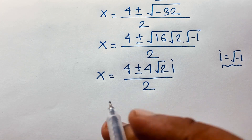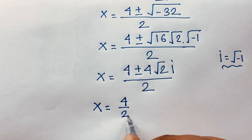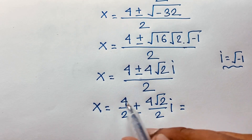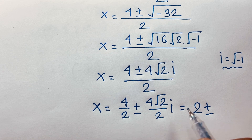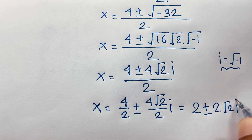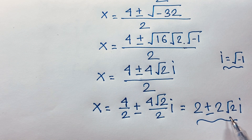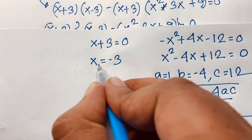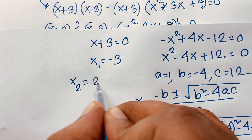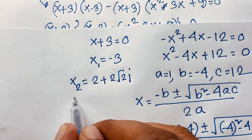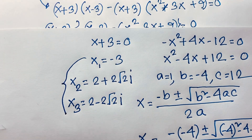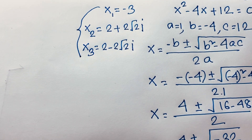Separating the fraction: x equals 4/2 plus or minus (4√2 · i)/2, giving x equals 2 plus or minus 2√2·i. So the final answers are: x₁ = −3 (real solution), x₂ = 2 + 2√2·i, and x₃ = 2 − 2√2·i (complex solutions).